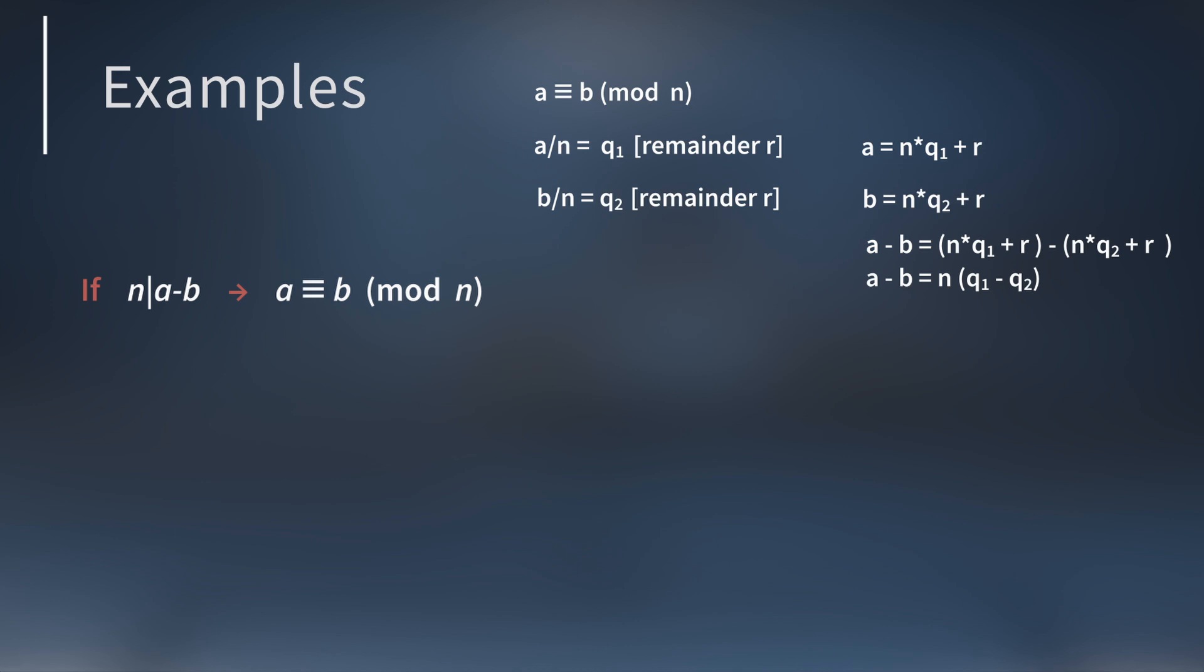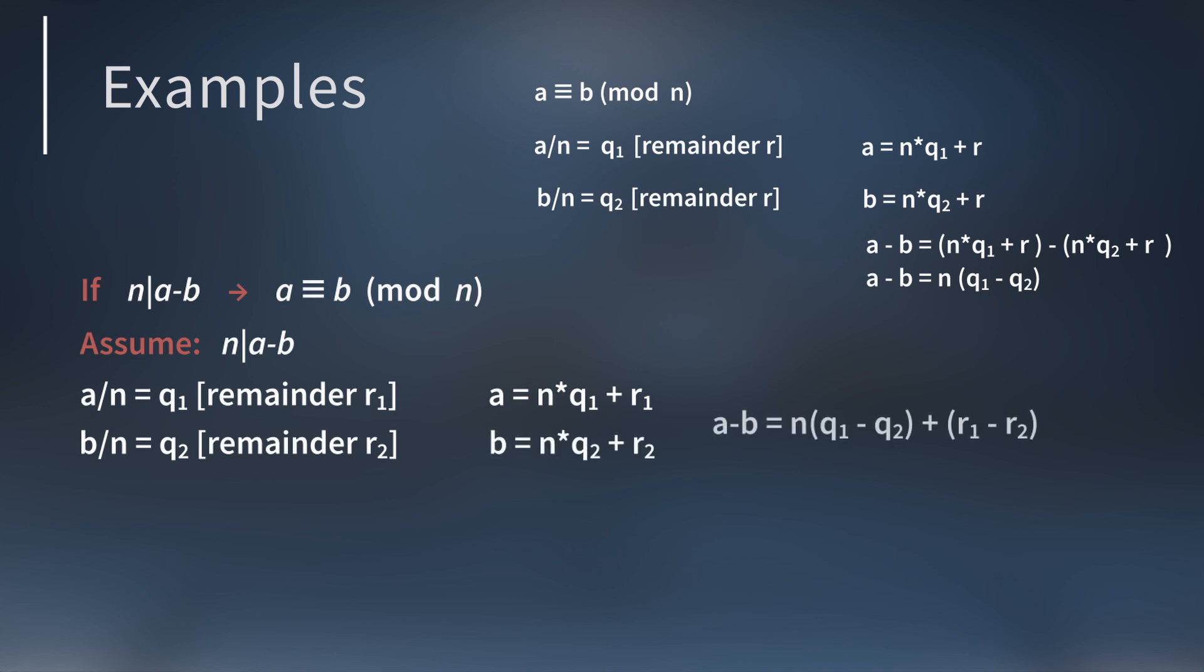To see this, let's assume that n divides a minus b. Next, suppose that when you divide a by n, the remainder is r1, and when you divide b by n, the remainder is r2. This means a equals n times q1 plus r1, and b equals n times q2 plus r2. So a minus b equals n times the quantity of q1 minus q2 plus the quantity of r1 minus r2.